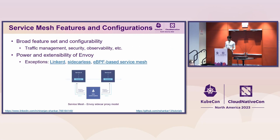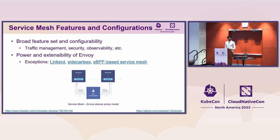Over the past few years, service meshes have amassed a wide array of features and configuration options. A lot of this has to do with the fact that they are built on top of the Envoy proxy with the sidecar model, and Envoy is very powerful with a lot of advanced capabilities that operators want to leverage. The exceptions here are Linkerd, which has its own Rust-based proxy, and we also have eBPF and sidecar-free service meshes, although not all the sidecar-less models are production-ready just yet, like Istio Ambient.